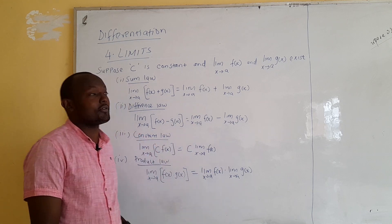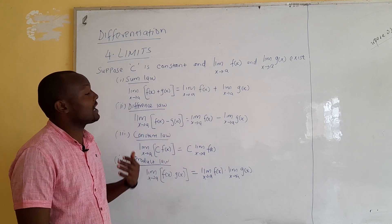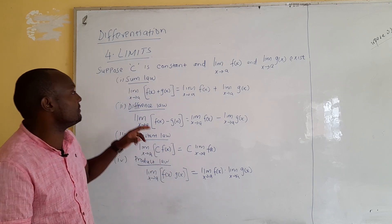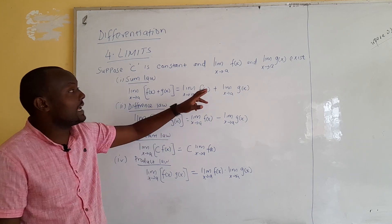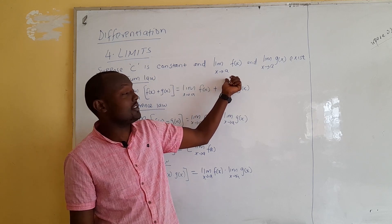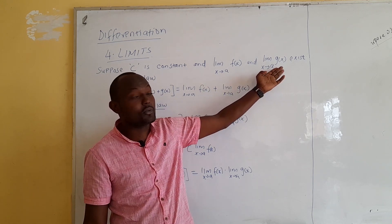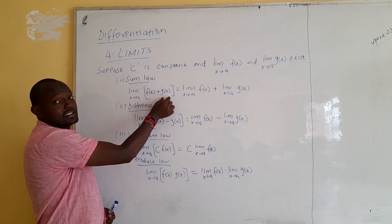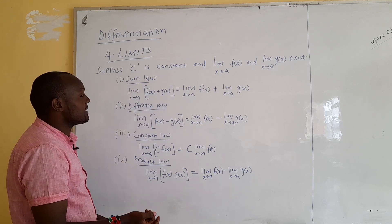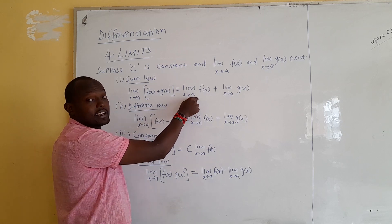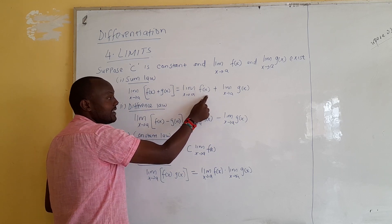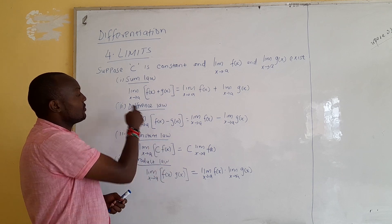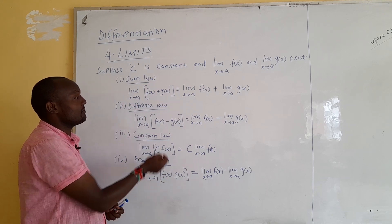Welcome everyone, this is our fourth class on calculus where we shall look at introduction to limits. We assume we have a constant c, and we have two limits as x approaches a of functions f(x) and g(x), and we suppose these two exist. If you are given the limit of f(x) plus g(x), what we call the sum law in limits, you can split them — you look at the limit of f(x) and the limit of g(x) separately.